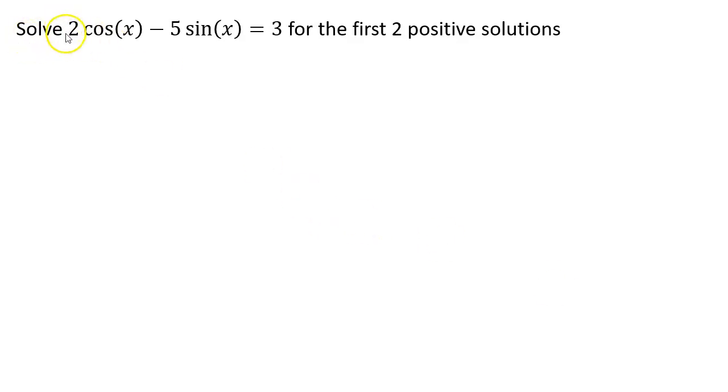Okay, we want to solve 2 cosine x minus 5 sine x equals 3 for the first two positive solutions. All right, so let's go ahead and get started.